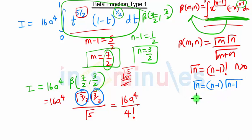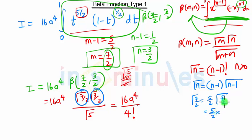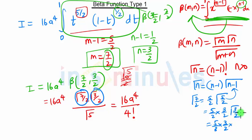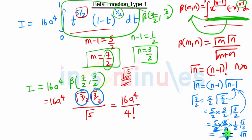So first we have 7/2: Gamma of 7/2 is nothing but 7/2 minus 1, which is 5/2, into Gamma of 5/2. Then we have 5/2 into Gamma of 5/2. For Gamma of 5/2, again we use this formula: that is 3/2 into Gamma of 3/2. Again for 3/2 we use this formula: that is half into Gamma of half. What is Gamma of half? Gamma of half is root pi. So 5 into 3 is 15, upon 2 into 2 into 2 into 2 which is 8, so 15/8 root pi — so Gamma of 7/2 is nothing but 15 root pi upon 8.